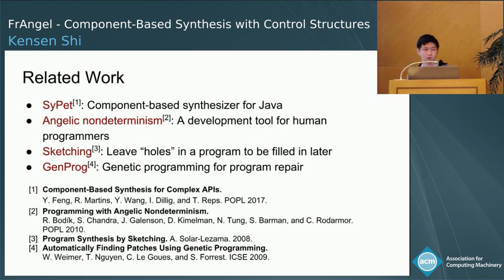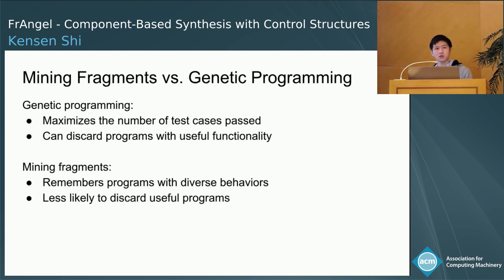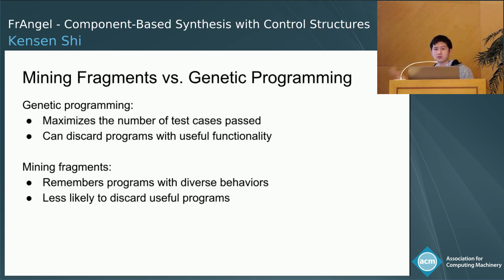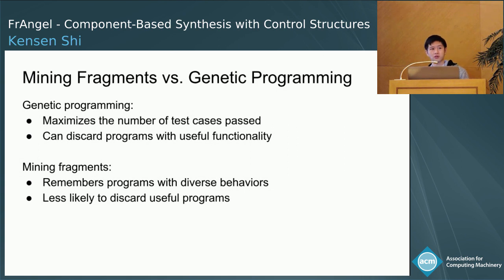However, there is a fundamental difference between mining fragments and genetic programming. In genetic programming, we want to maximize a fitness function such as the number of test cases passed. Unfortunately, this might discard programs with useful functionality—for example, a program that correctly implements some edge case behavior where there are very few edge case examples might not be remembered. In contrast, the mining fragments approach remembers programs with diverse behaviors: if we find an edge case program with behavior we haven't seen before, we're guaranteed to remember it regardless of how many test cases it passes. Mining fragments is therefore less likely to discard useful programs.